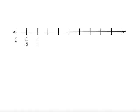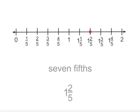1 fifth, 2 fifths, 3 fifths, 4 fifths, 5 fifths is our whole number 1. 6 fifths is 1 and 1 fifth, 7 fifths is 1 and 2 fifths, 8 fifths is 1 and 3 fifths, 9 fifths is 1 and 4 fifths, and 10 fifths is our whole number 2. So 7 fifths on a number line is 1 and 2 fifths.